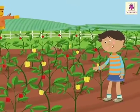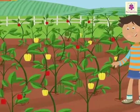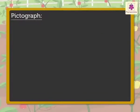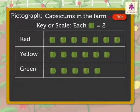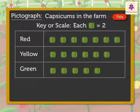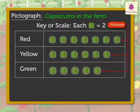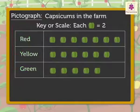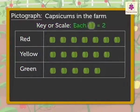Joy visited a farm which was full of red, yellow, and green capsicums. Now, let's read this PICTOGRAPH. Here, the title, Capsicums in the Farm, tells us the PICTOGRAPH is about the number of capsicums in the farm. The labels give us the information on the colors of the capsicums.